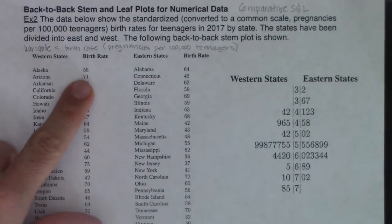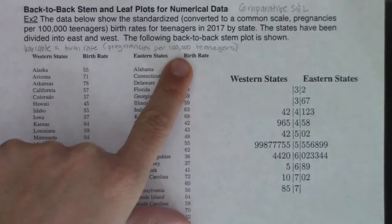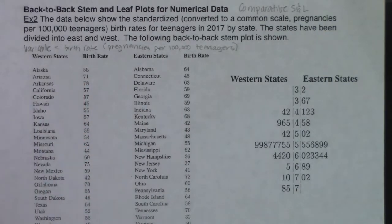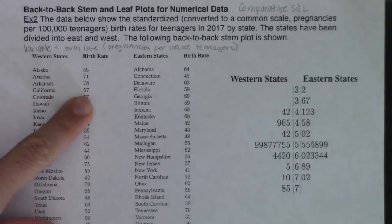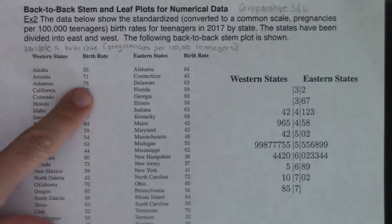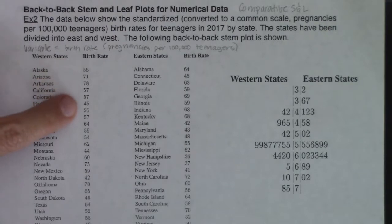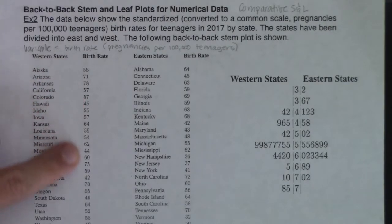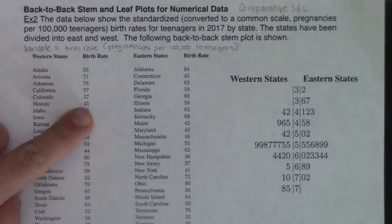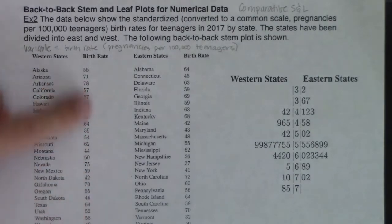In Alaska in 2017, they had 55 pregnancies for every 100,000 teenagers. In Arizona they had 71, and California came in at 57 pregnancies per 100,000 teenagers. Arkansas was having a good time — 78 per 100,000 teenagers, and that's just on the western side of the country. Arkansas looks like the highest; Hawaii was maybe the lowest.